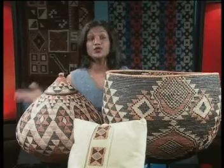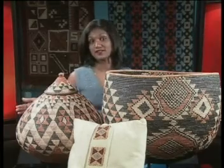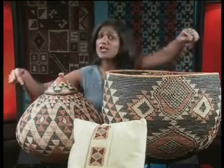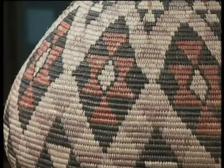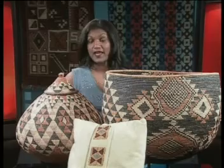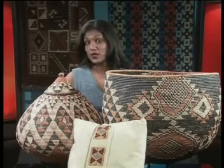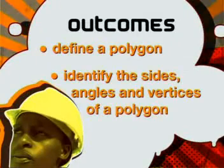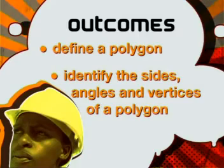Take a look at these beautiful baskets. What shapes do you see? Do you know what we call all these shapes? We call them polygons. Have you heard this word before? We find a polygon, identify the sides, angles and vertices of a polygon.